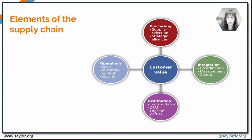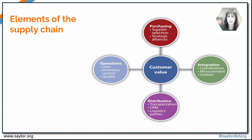Once materials are purchased, you move on to manufacturing and operations — looking at inventory control, quality control, and how to streamline the process to be as profitable and effective as possible. Once you have your finished goods, distribution addresses how to get them to the ultimate customer. All of these work together to provide customer value. The last step is integration: how do you coordinate everything, measure success, and control what's going on? Evaluation of the overall process is also important — are you ultimately providing the customer the value they're seeking?